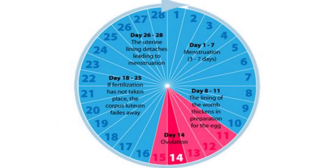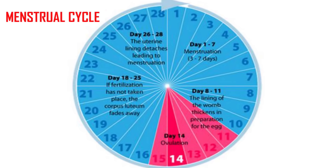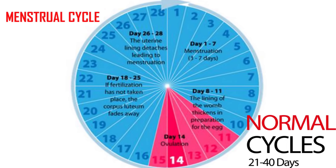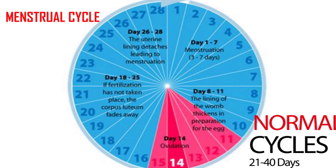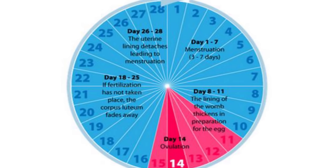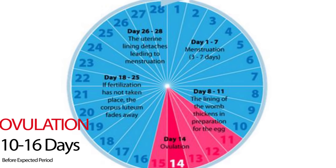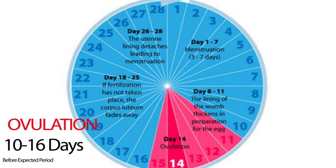If you have regular cycles of normal length from 21 to 40 days, ovulation is most likely to occur around 10 to 16 days before the next expected period.